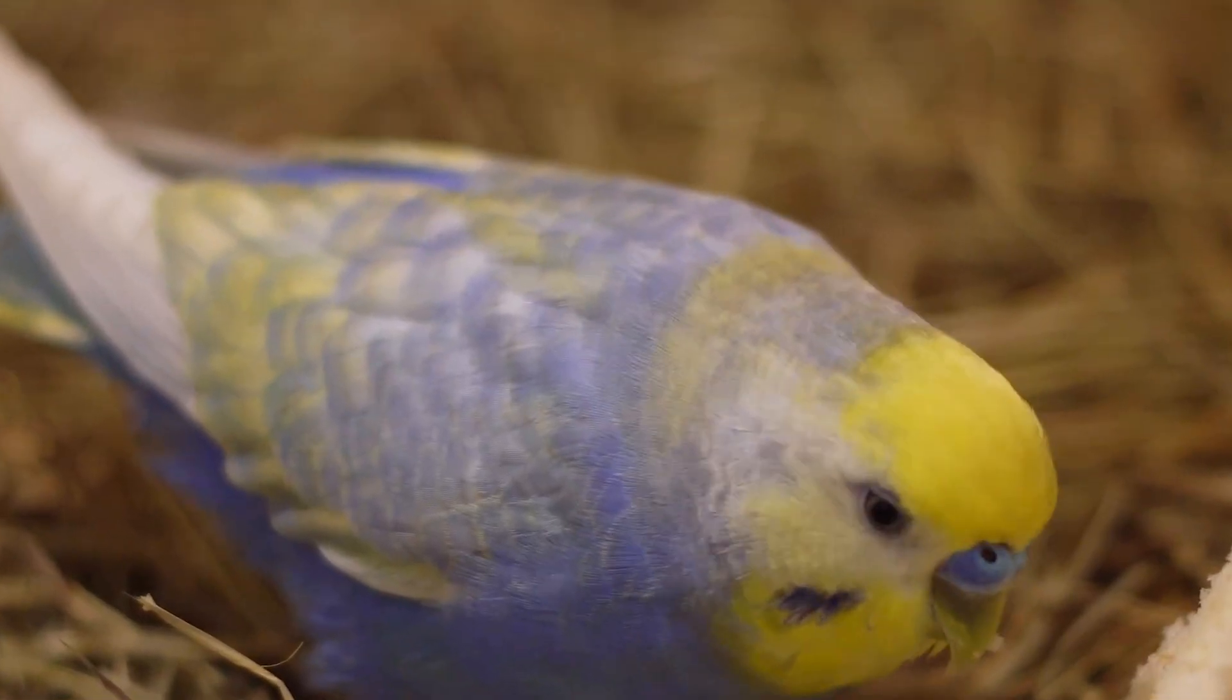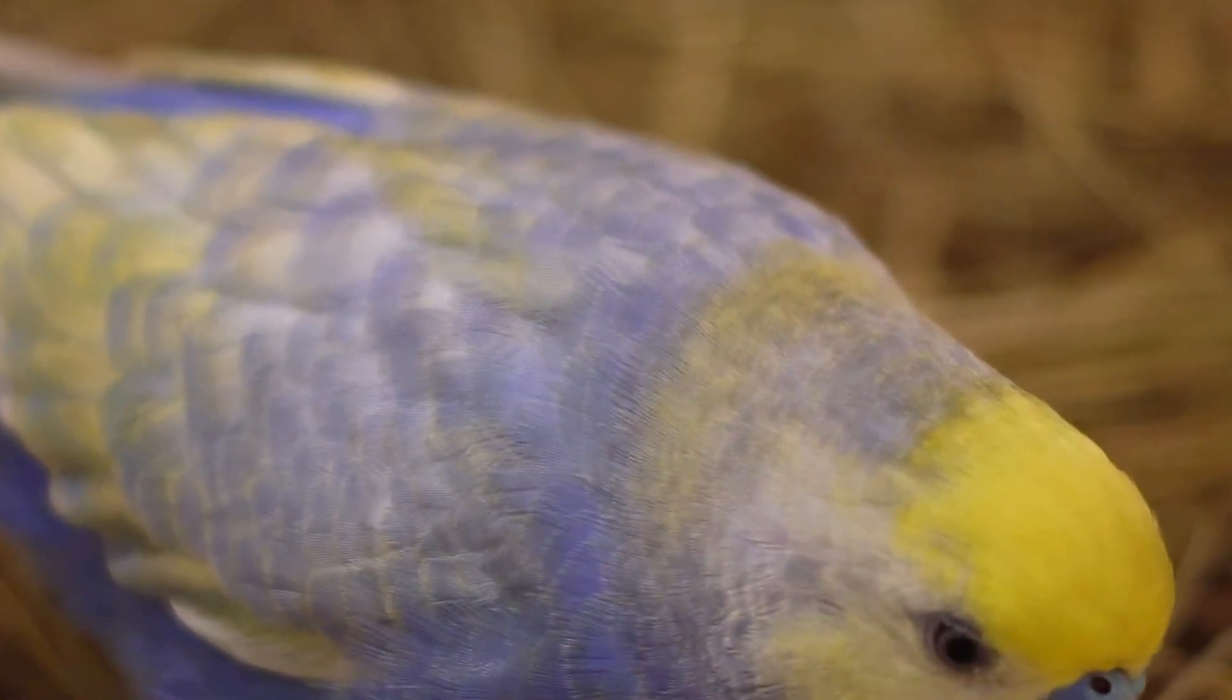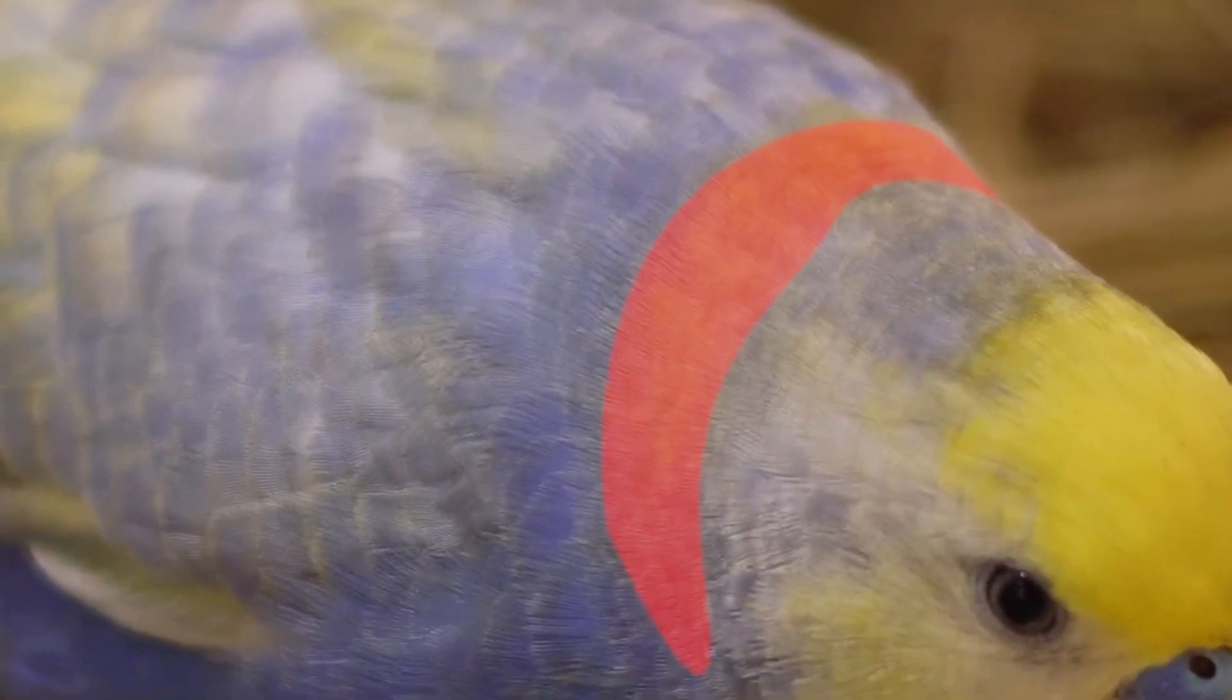Here's a real life example. This budgie carries the violet factor. But see the nape? The yellow pigment there completely wipes it out. There is no violet whatsoever in that area.